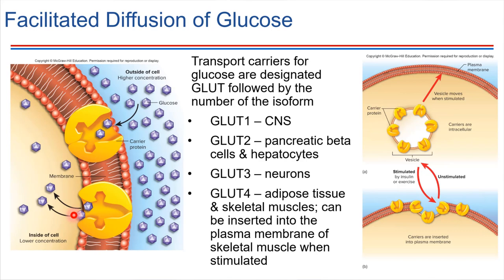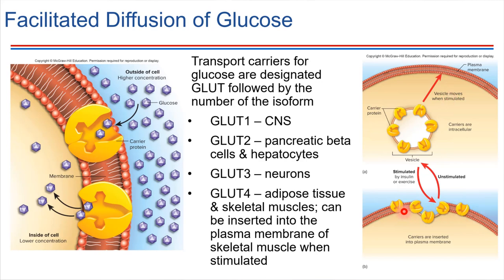The amazing thing with these transport carriers is that they can be stored inside of the cell, and then inserted into the membrane on an as-needed basis. The way they're generally kept when not needed is in vesicle form — here's a vesicle with a number of carrier proteins embedded in it. When the cell is stimulated, this vesicle will fuse with the membrane in order to insert those carrier proteins, so the cell would then be ready to take up glucose. We'll see this in more detail when we learn about insulin, which is something that can trigger this fusion to take place with the plasma membrane.